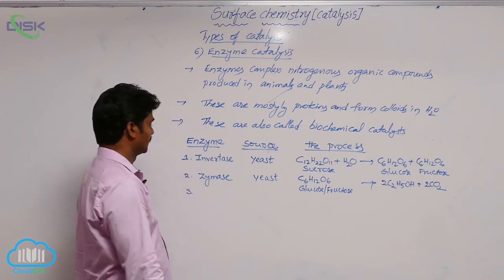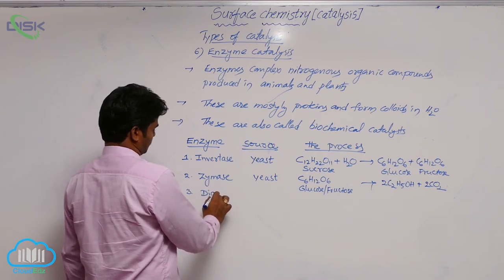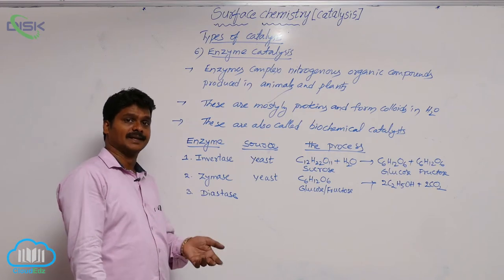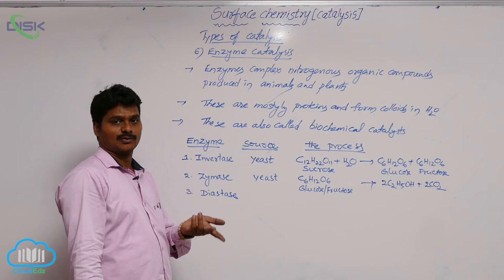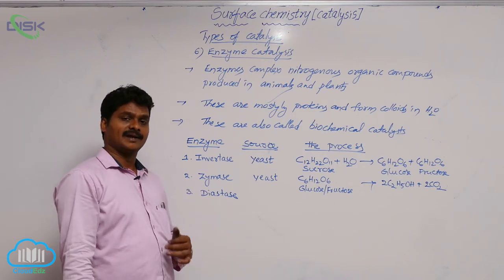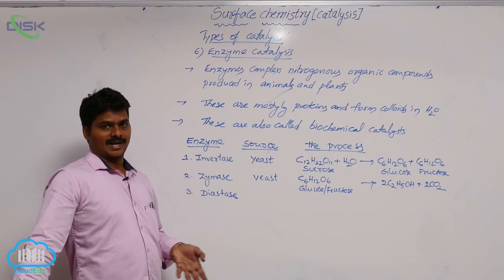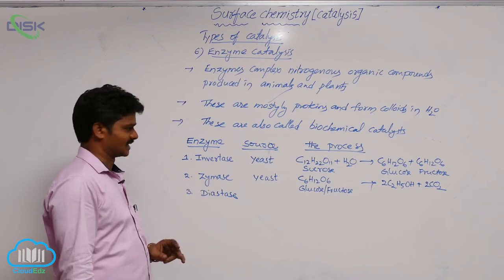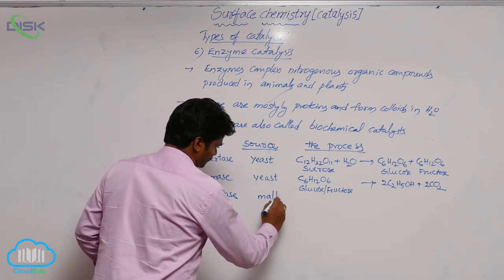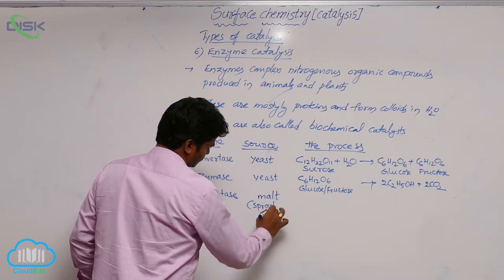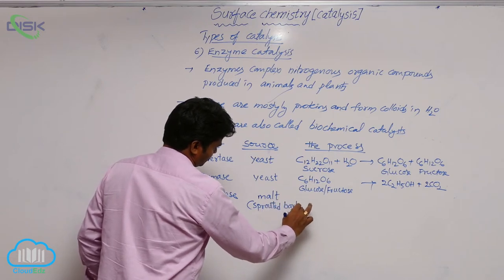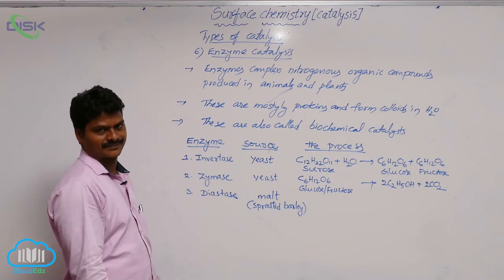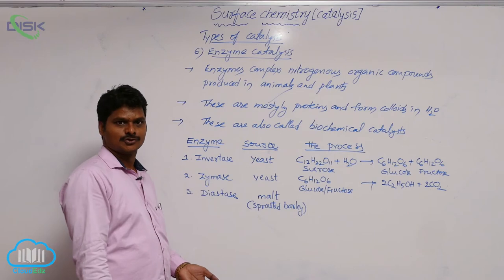The third enzyme is diastase. Its source is malt — that means sprouted or germinating barley. Most enzymes end with '-ase', while most carbohydrates end with '-ose' such as glucose, fructose, maltose, lactose. Diastase converts starch into maltose.